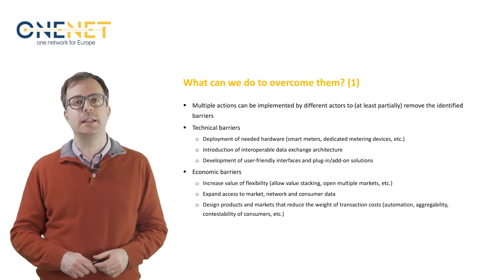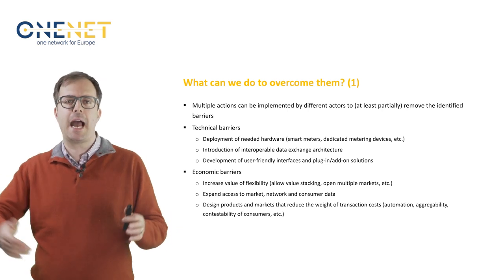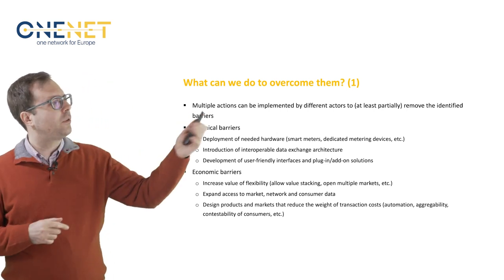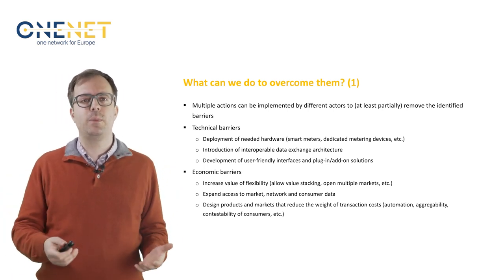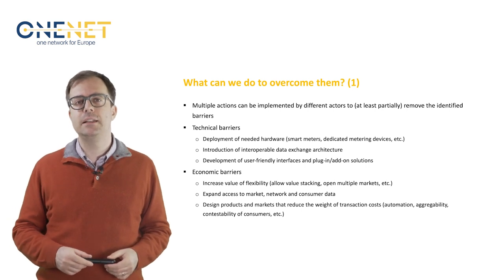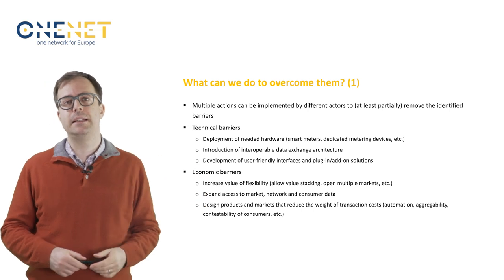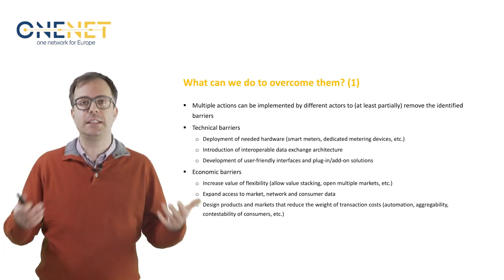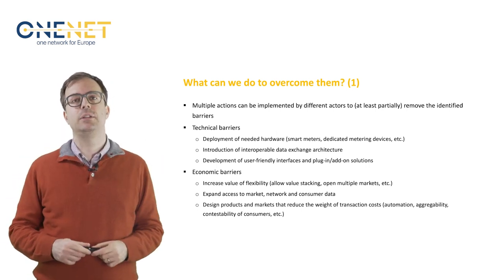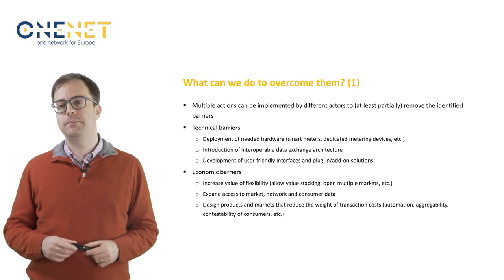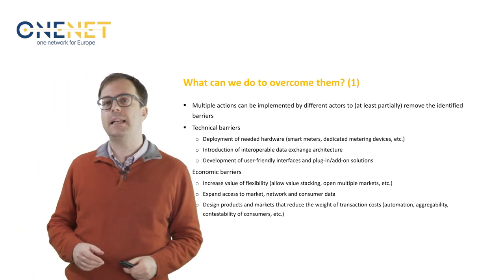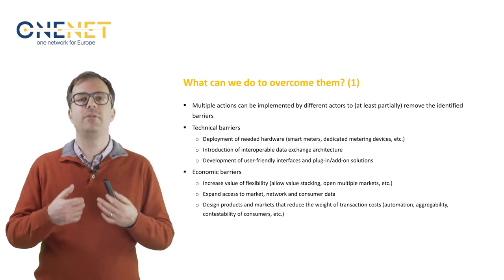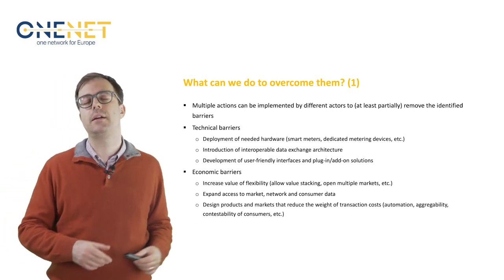In the OneNet project, we looked at possible recommendations addressing the various actors and stakeholders involved in markets for ancillary services. Starting from the technical barriers, one first recommendation is that we need to deploy the infrastructure needed to meter and communicate data about the consumption and production of customers. Then we need to introduce interoperable data exchange architectures to allow parties to communicate data meaningfully. And finally, we can develop and deploy user-friendly solutions that give control power to consumers and their intermediaries.